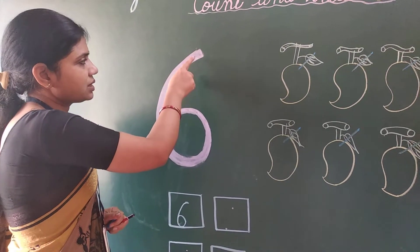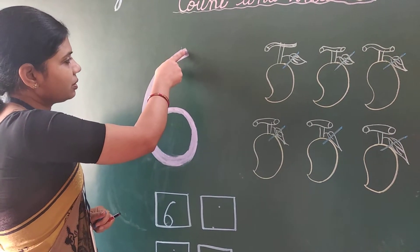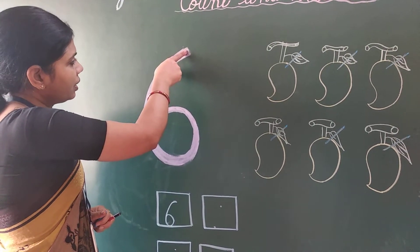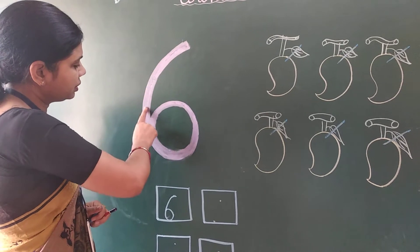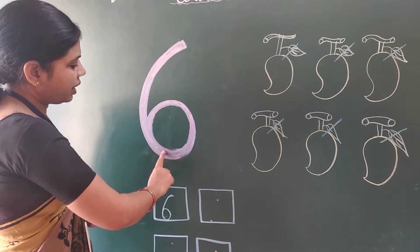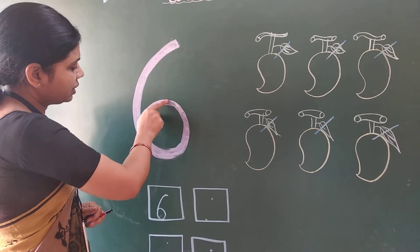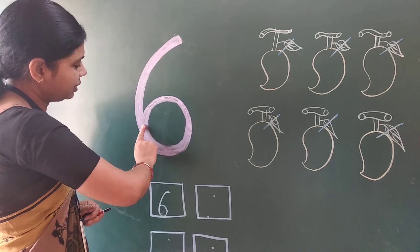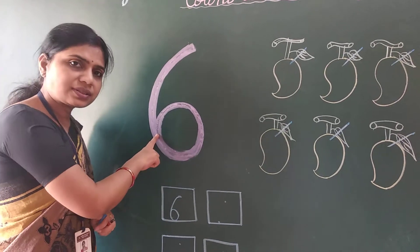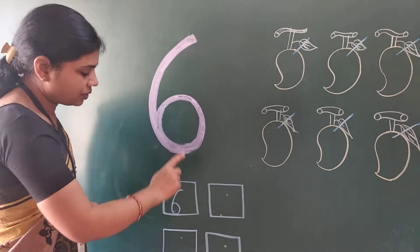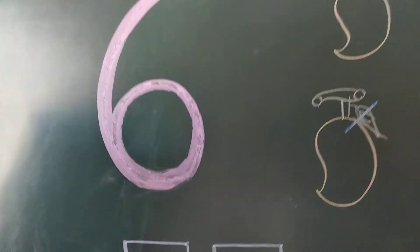First we trace this number 6. Practice with me. Make a curve, then join this here like this. This is number 6. Now see here, this is number 6.